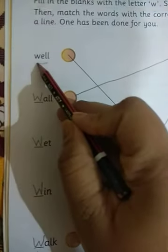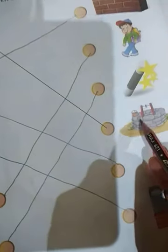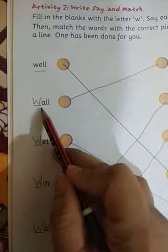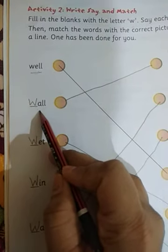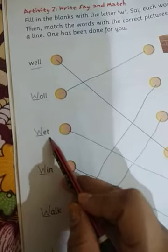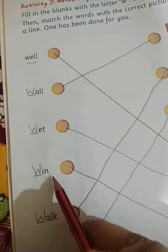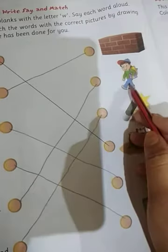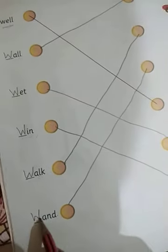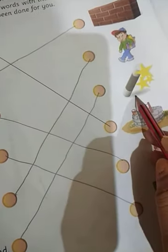So, again, read aloud with me. W-E-L-L. Well. Well means kuan. W-A-L-L. Wall. Wall means diwaal. W-E-T. Wet. Wet means geela. W-I-N. Win. Win means jeetna. W-A-L-K. Walk. Walk means chilna. W-A-N-D. Wand. Wand means chhadi.